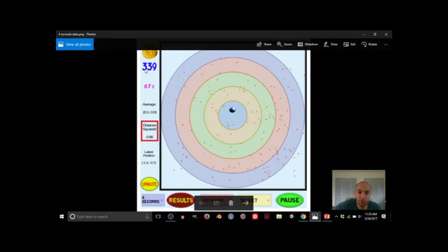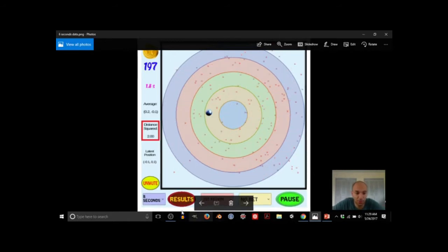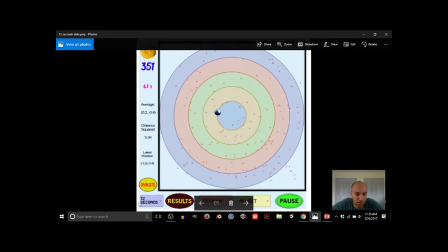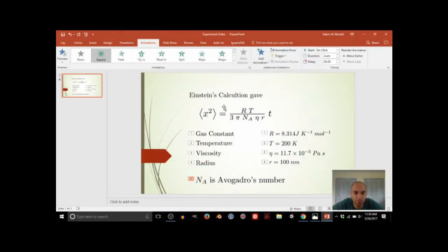If I let it run for about 300 times, it gives me this measurement. So for four seconds I get 0.86 micrometers squared. If I let it run for eight seconds, I get, for example, two micrometers squared. And I can also let it run for 12 seconds and get that. So what am I going to do with this measurement?